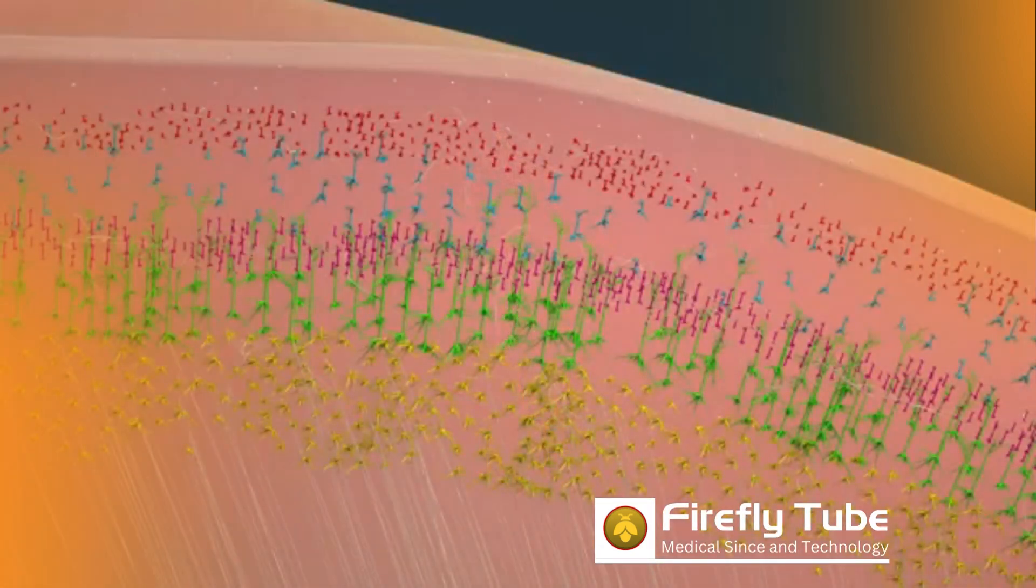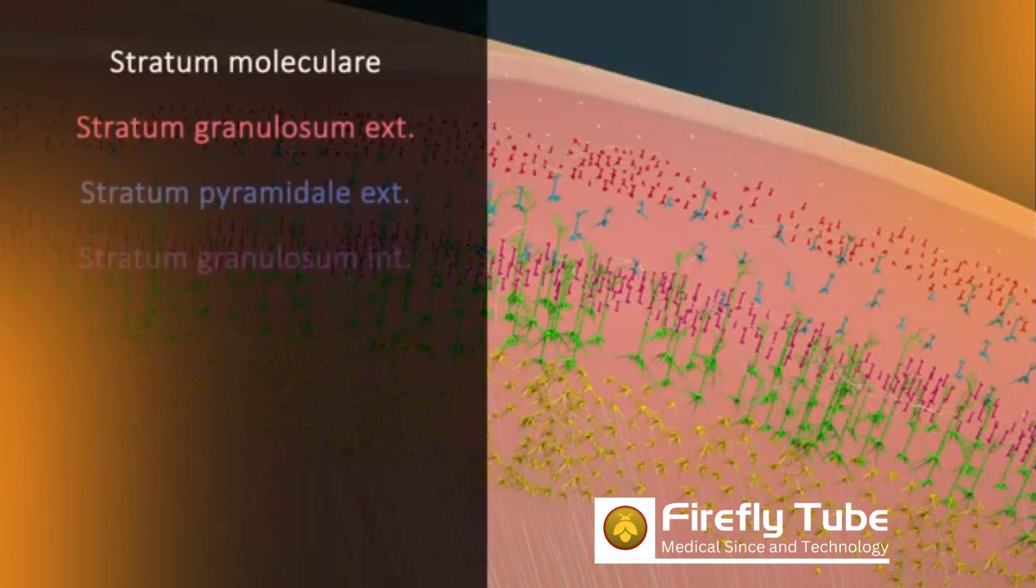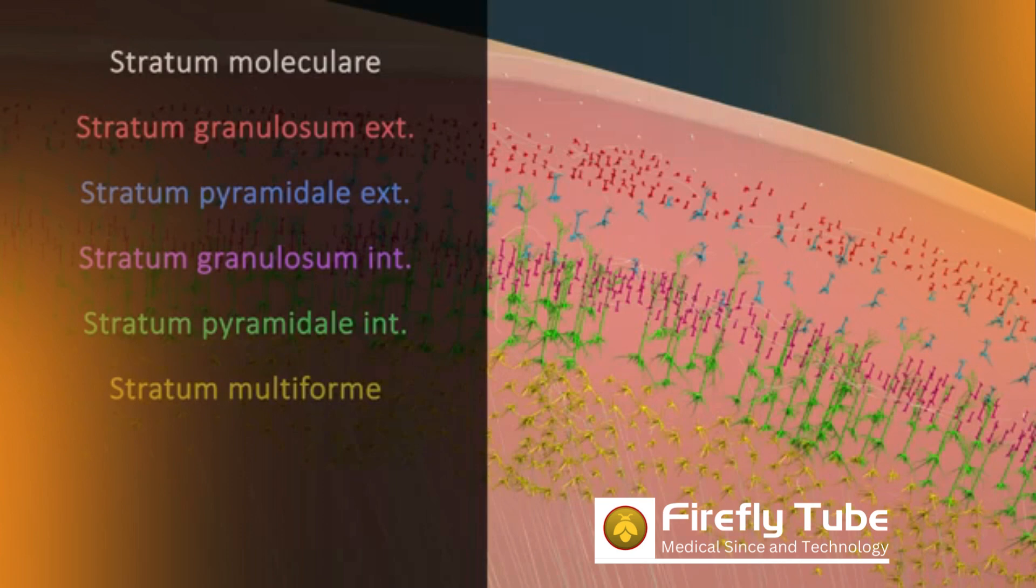The cerebral cortex consists mainly of six layers. For the sake of clarity, only a few cells and nerve fibers are shown here.